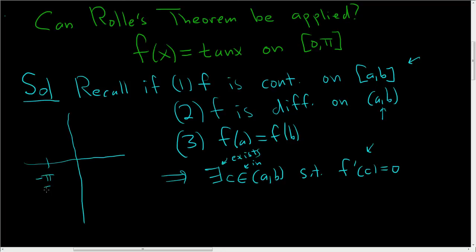So tangent, well, here's negative π/2, we have a vertical asymptote there, and then here's π/2, and we have a vertical asymptote there, and then here's 3π/2, and so we have a vertical asymptote there. And then here's π, and here's 0, and the tangent function looks something like this.